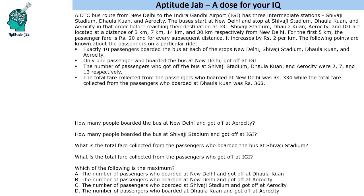Hello everyone, welcome to AptitudeJab. This problem says that a DTC bus route from New Delhi to Indira Gandhi Airport has three intermediate stations: Shivaji Stadium, Dholakunha, and Aero City, and it travels in this order. It starts from New Delhi, then goes to Shivaji Stadium, then Dholakunha, then Aero City, and finally IGI.